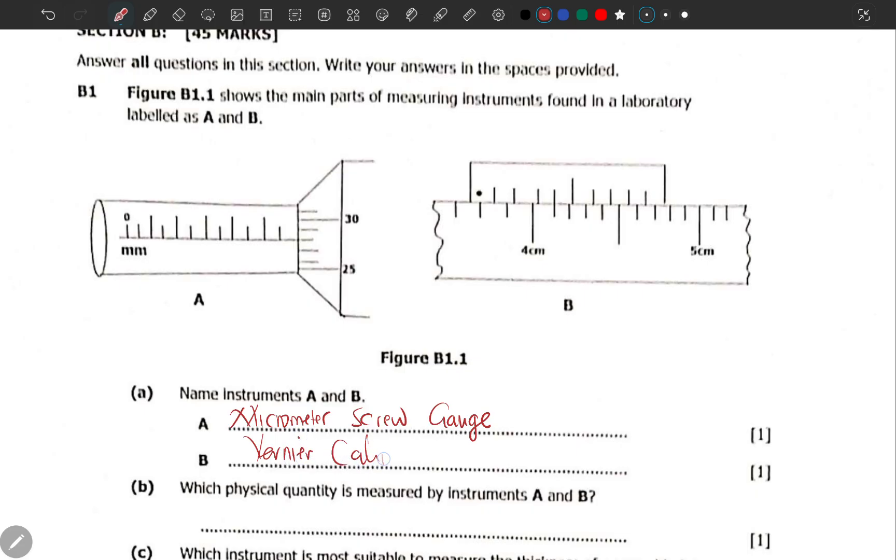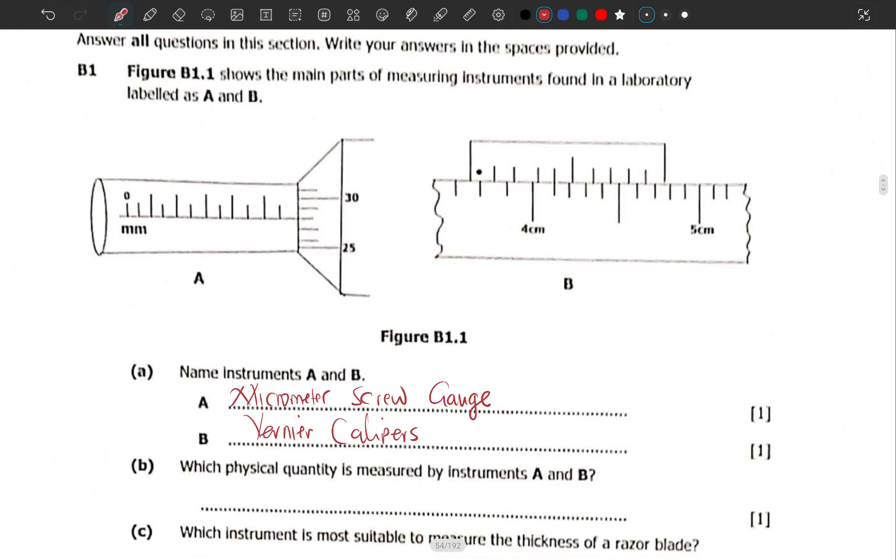Which physical quantity is measured by instrument A and B? Most people get this wrong. A physical quantity is a quantity which can be measured using physical means. What do these measure? They measure thickness and other dimensions, but what quantity is that? It's length. The same way mass is a quantity, volume is a quantity, density, amount of substance, and time are quantities.